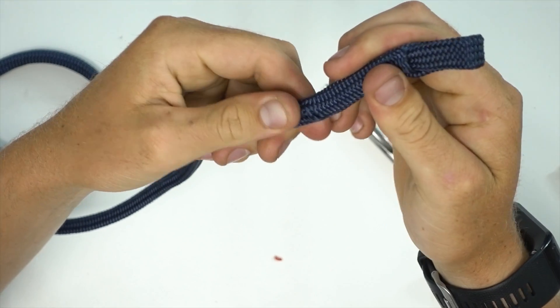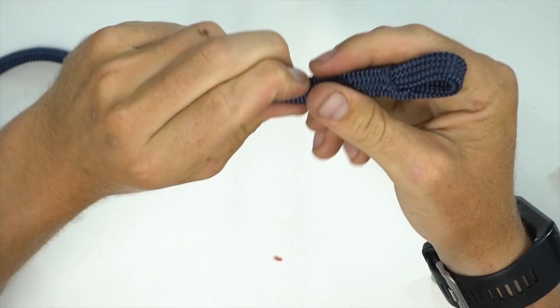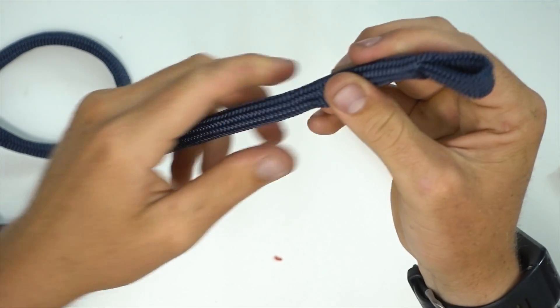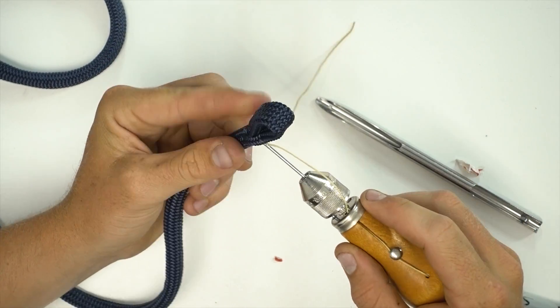As we tighten the core, the cover will pop right back into the rope and then we're just going to stitch it all closed.